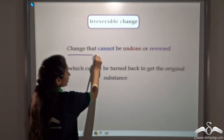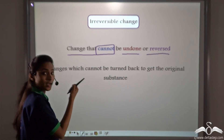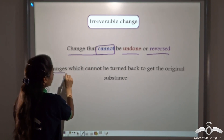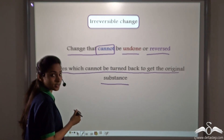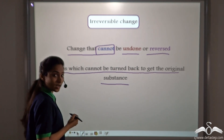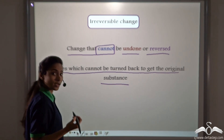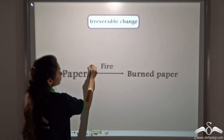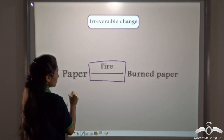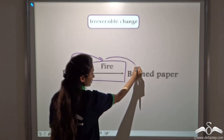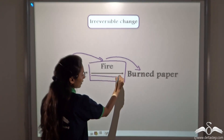This is called an irreversible change. An irreversible change is a change that cannot be undone or reversed. Her brother cannot reverse the change he has made to the burnt paper — changes which cannot be turned back to get the original substance. The drawn paper was the original substance, and her brother burnt it. He cannot turn back the burnt paper to the drawn paper. Irreversible change is denoted by a single arrow, because it does not work both ways. Paper catches fire and turns into burnt paper, but you cannot turn the burnt paper back to the original paper.